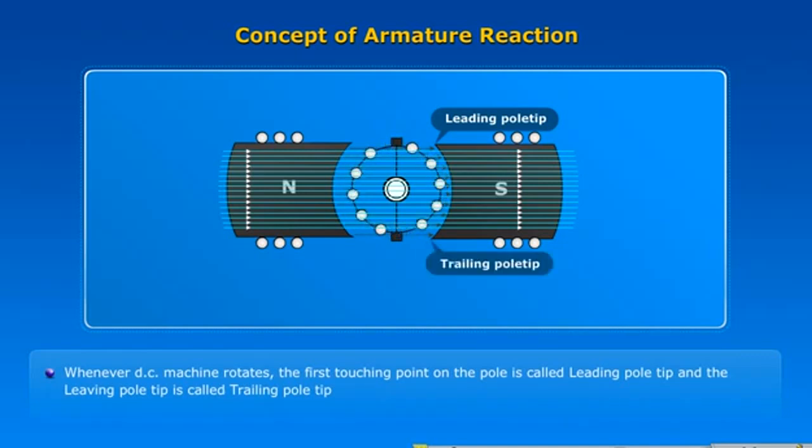Whenever DC machine rotates, the first touching point on the pole is called leading pole tip and the last touching point is called trailing pole tip.